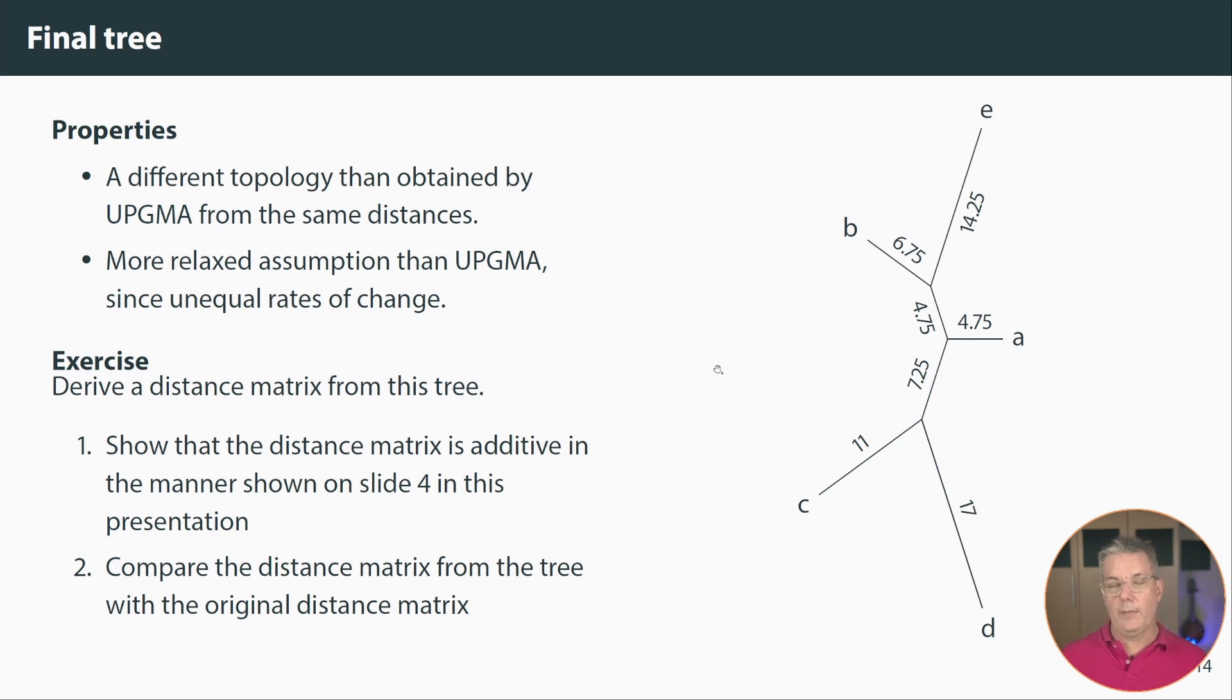If you've seen the UPGMA tree using the same distances it actually leads to a different topology. But of course it leads to an ultrametric tree so that UPGMA everything is the same distance from the root. In this case we don't have a root, we don't have the assumption of a constant molecular clock. So these are more relaxed assumptions. The additivity model is a more relaxed assumption than the molecular clock. And this is the tree we get. I encourage you to look at both of these videos one after another and see how much sense this makes.